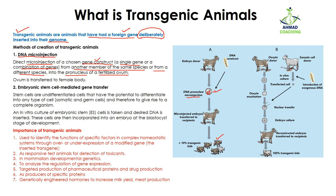The second method to create transgenic animals is embryonic stem cell mediated gene transfer. Stem cells are actually undifferentiated cells that have the potential to differentiate into any type of cell. They may transform into somatic cells or into germ cells. Somatic cells are the normal body cells, while germ cells are the sperm or egg cells. This means stem cells have the ability to give rise to a complete organism.